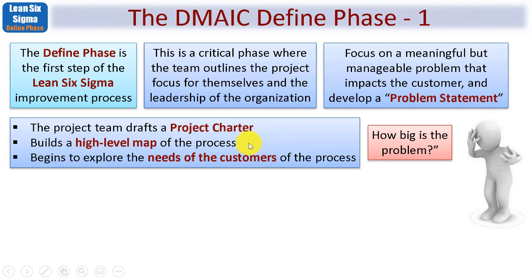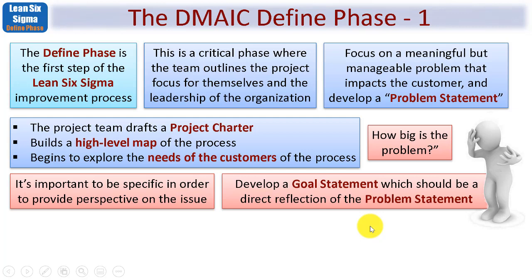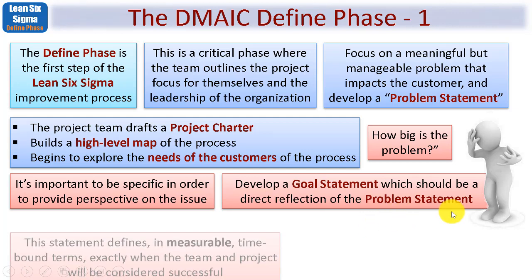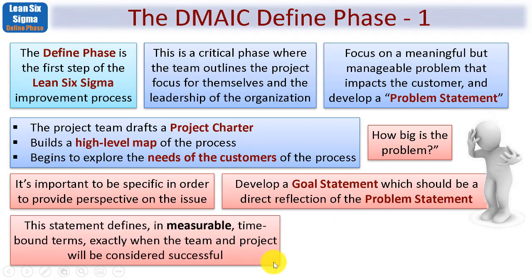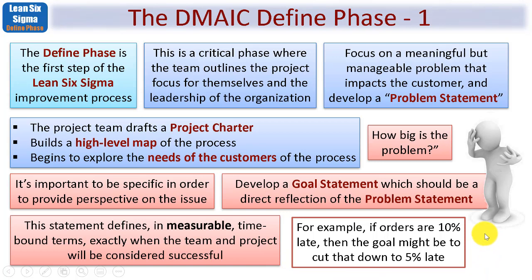The project team drafts or updates the project charter, and a key deliverable is to build a high-level map of the process involved. Remember that Lean Six Sigma is about understanding process problem areas and fixing them, so the first step is to understand the flow of the process under consideration. Within the Define Phase we also develop a goal statement, which should be a direct reflection of the problem statement — defining in measurable, time-bound terms exactly when the project will be considered successful. For example, if orders are 10% late, the goal might be to cut that down to only 5% late.